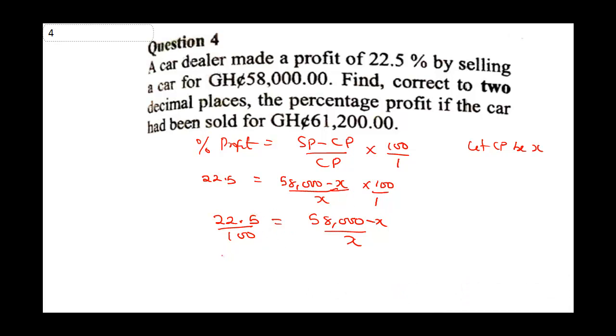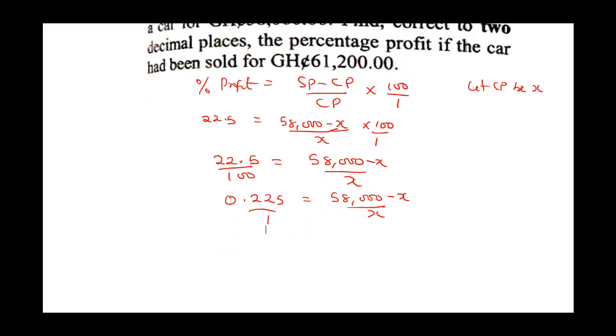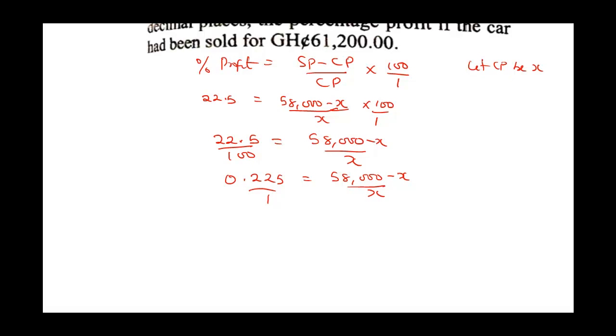At this point, 22.5 divided by 100, shift your decimal place two places to the left, you're going to have 0.225, which is equal to 58,000 minus X all over X. At this point, we can decide to cross-multiply. Cross-multiply, we're going to have 0.225X is equal to 58,000 minus X.